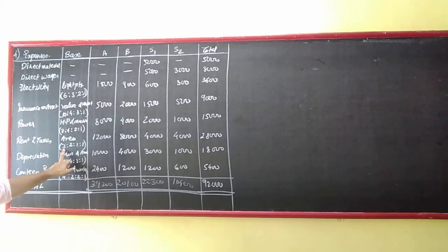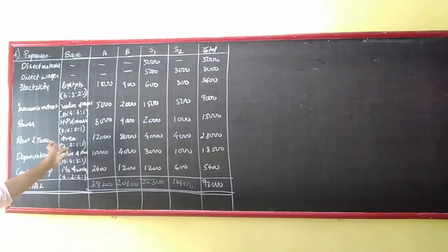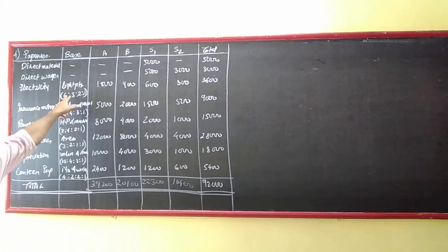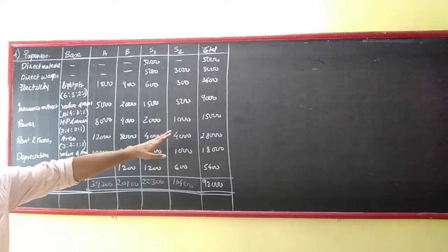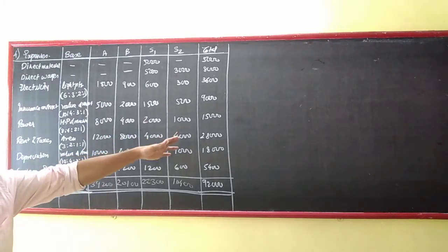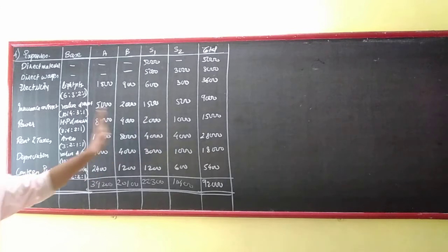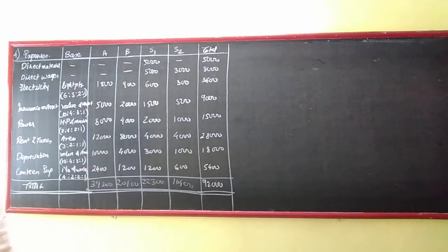Now, there are different ways of presentation. If you don't have total cost, you can be able to pay for the number of workers. Then, number of workers: 150.